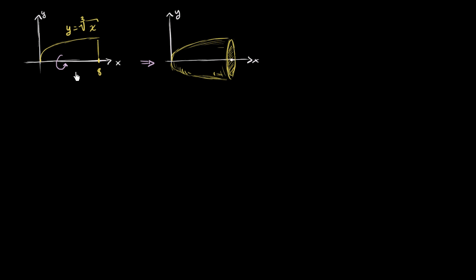So how would we do this? What we want to do is construct a rectangle that looks like this. Its height is dy, and then its length — or width — is going to be 8 minus whatever x value this is right over here.